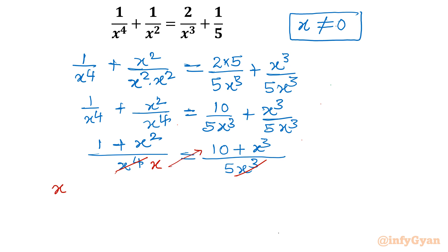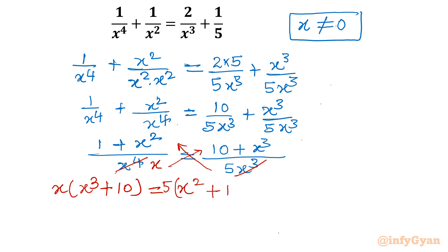Let me cross-multiply the diagonals. First diagonal: x times (x³ + 10). Left diagonal: equals 5 times (x² + 1). Let's expand: x times x³ gives x⁴, x times 10 gives 10x, 5 times x² gives 5x², and 5 times 1 gives 5. Now if we take 10x away from both sides, the equation becomes x⁴ = 5x² − 10x + 5.